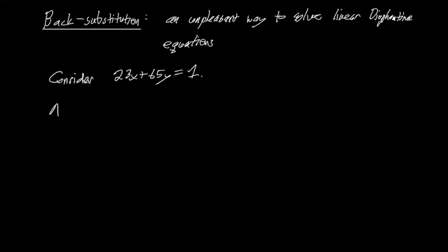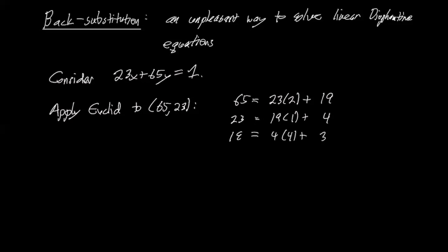Let's apply the Euclidean algorithm to the pair 65 and 23. So we get 65 is 23 times 2, which is 46, plus a remainder of 19. Then 23 is 19 times 1 plus remainder of 4. 19 is 4 times 4 plus a remainder of 3. 4 is 3 times 1 plus a remainder of 1, and then 3 is 1 times 3 plus 0.